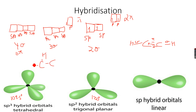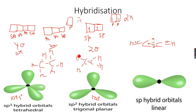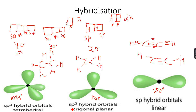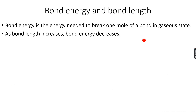All carbon-carbon single bonds and carbon-hydrogen single bonds are sp3 hybridized. All carbon-carbon double bonds are sp2 hybridized, and all carbon-carbon triple bonds are sp hybridized. sp is a linear shape with 180° bond angle, sp2 is trigonal planar with 120°, and sp3 is tetrahedral with 109.5°.